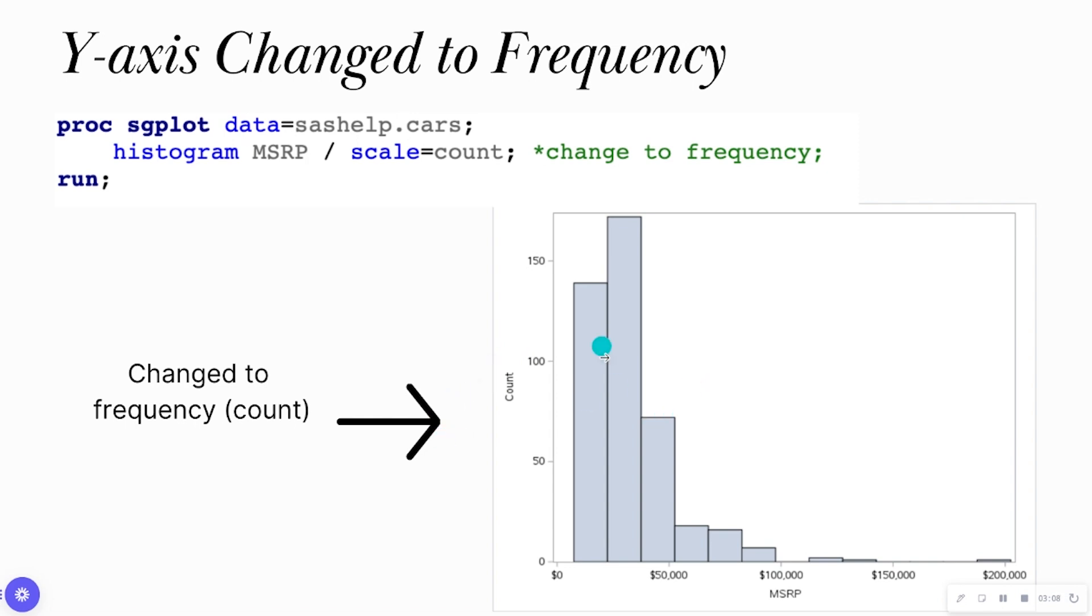And this can tell us a lot about the manufacturer's suggested retail price for a car. It looks like there may be one car that's worth a lot in our data set. But on average, it looks like most of the cars is going to be worth less than $50,000 in our data.